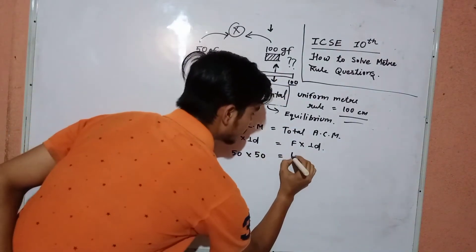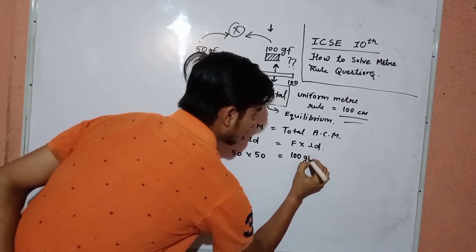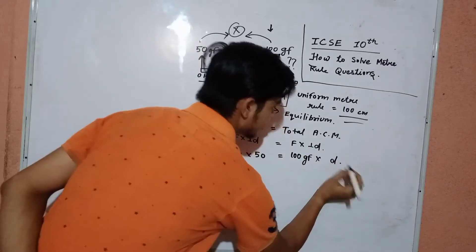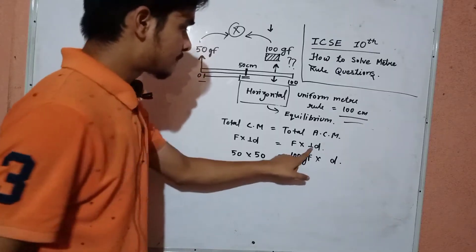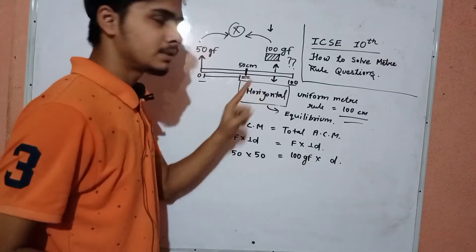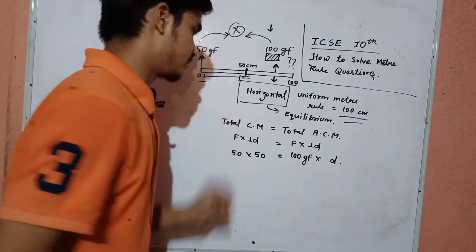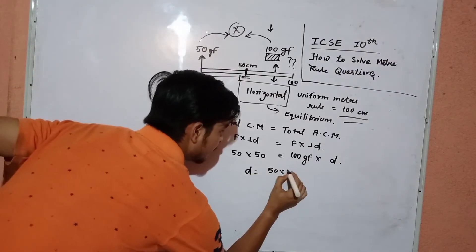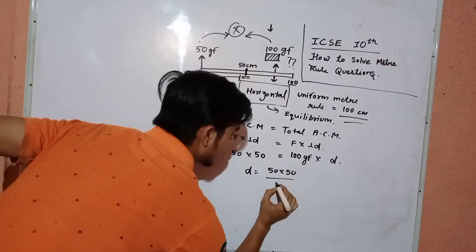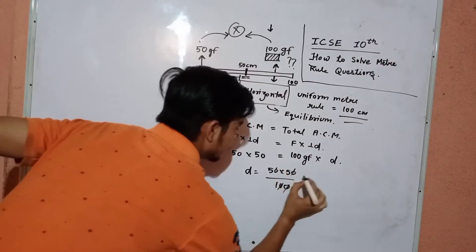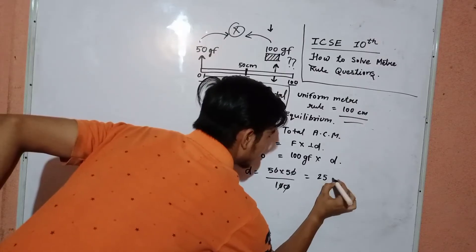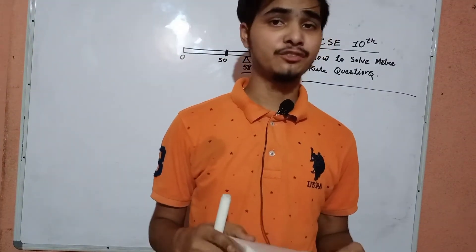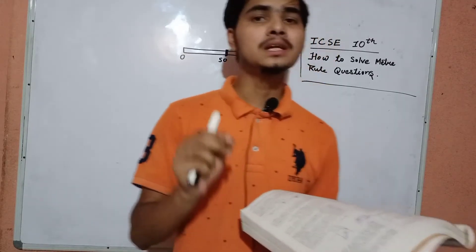The force value is 100 gram force, and the perpendicular distance we need to calculate — let the perpendicular distance be d. The distance is always calculated from the midpoint. So: 50 × 50 = 100 × d, giving d = 2500 ÷ 100 = 25 centimeters. The 100 gram force should be placed 25 cm from the pivot.